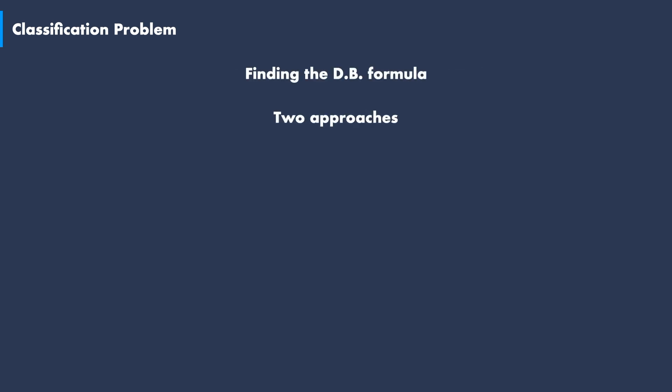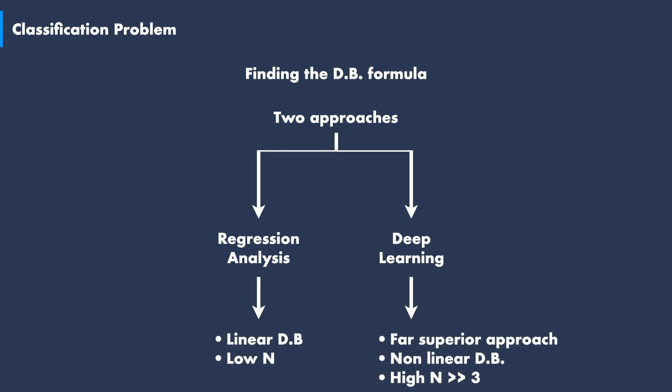In order to find the formula for the decision boundary, we will present two mathematical approaches. The first approach is called regression analysis. The second approach is known as deep learning and is the central core of this series. We will show how deep learning presents a far superior approach to regression analysis. This superiority is conspicuous when dealing with real-world classification problems that have high nonlinear decision boundaries and big numbers of features. So stay tuned for the next videos.